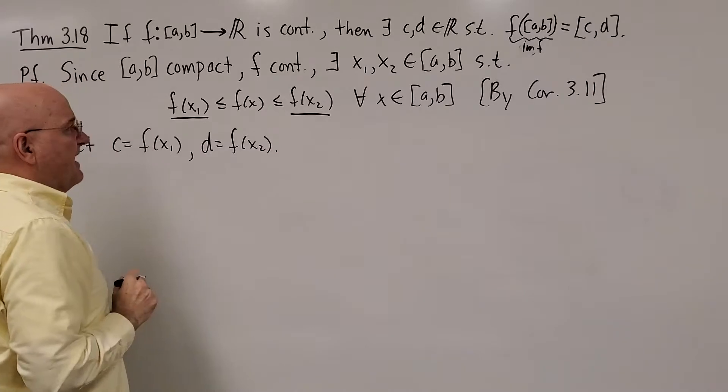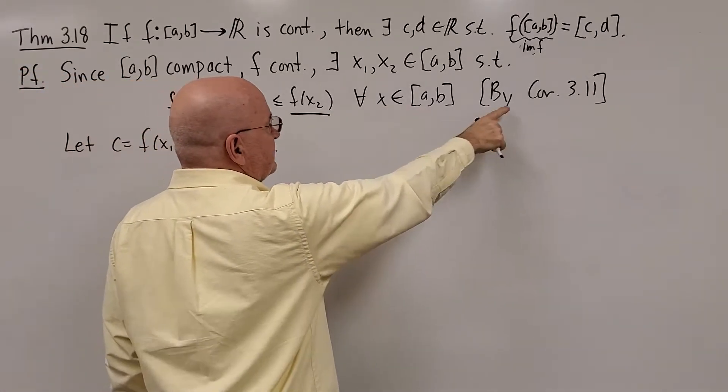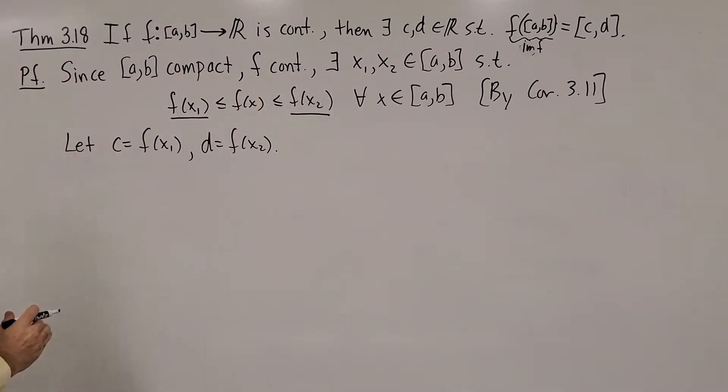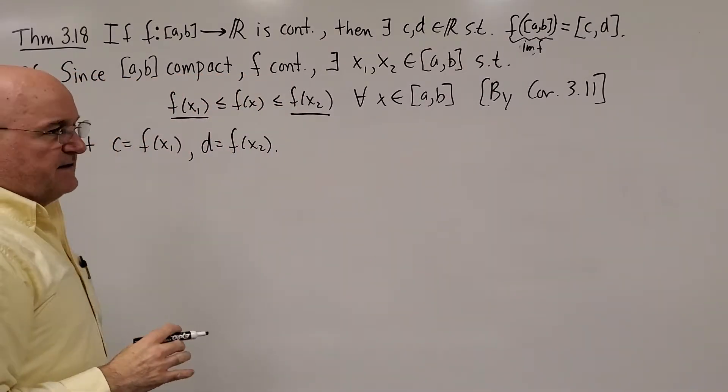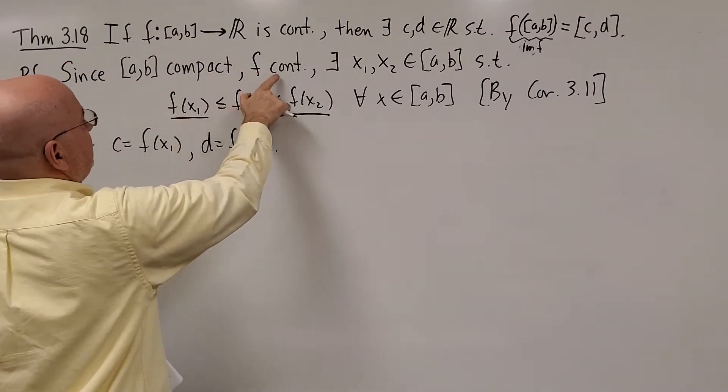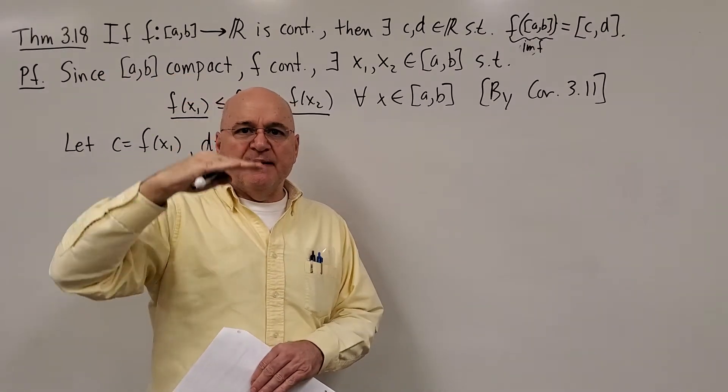For all x's in A and B, and that's my corollary 3.11, that just said that under this hypothesis, with a compact set, a continuous function F will attain its minimum and maximum values.